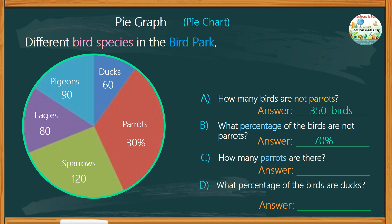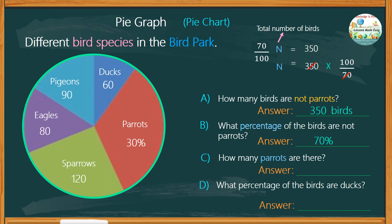So how many parrots are there? To answer this question, we must first find how many birds there are in total, then subtract the number of birds that are not parrots. From the pie chart, 70% of the total number of birds is 350. Let N be the total number of birds. 70% can be expressed as 70 over 100. To find the value of N, we take 350 multiplied by the reciprocal of 70%, which is 100 over 70. We can do cross-cancellation — there are 5 groups of 70 in 350 — giving us 5 times 100, which equals 500.